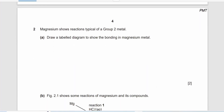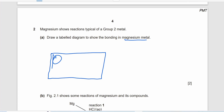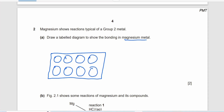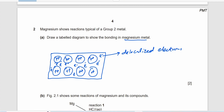Magnesium shows metallic bonding, typical of Group 2 metals. To draw the labelled diagram of magnesium metal, we show the magnesium cations with a 2+ charge — after losing two outer electrons, magnesium becomes Mg²⁺. Those electrons become delocalized, free-moving electrons moving around the cations. This represents the metallic bond. We label the delocalized electrons and the metallic cations.